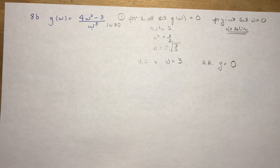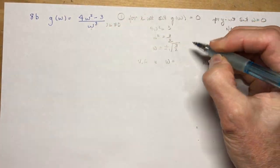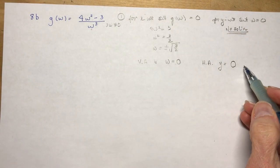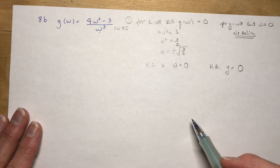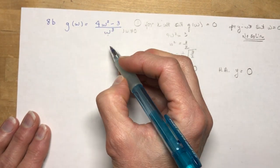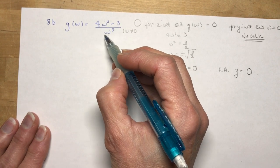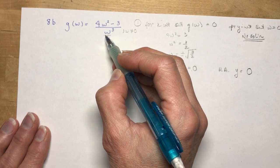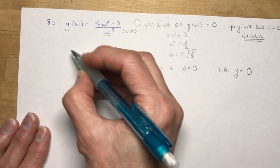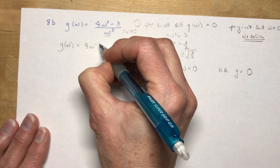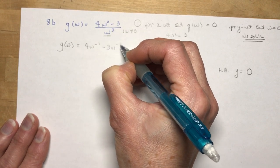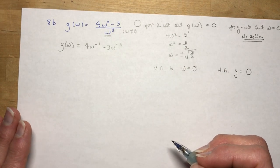This is easy to differentiate if you simplify first. If you ever have a function with just one term in the denominator, divide each term through it. So 4w²/w³ = 4w⁻¹ and 3/w³ = 3w⁻³. So g(w) = 4w⁻¹ − 3w⁻³. Isn't that much easier? You don't need the quotient rule. g'(w) = −4/w² + 9/w⁴.